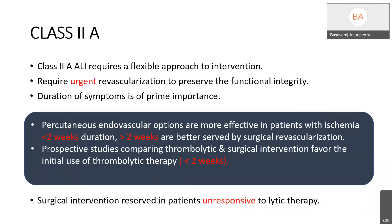Class 2A acutely ischemic limbs require a flexible approach and urgent revascularization for limb salvage. Duration of symptoms is of prime importance: percutaneous endovascular options are more effective in patients presenting with less than 2 weeks of symptoms, whereas those with more than 2 weeks are better served by surgical revascularization. Studies favor initial thrombolytic therapy for patients presenting within 2 weeks, with endovascular or surgical intervention reserved for those unresponsive to thrombolytic therapy.